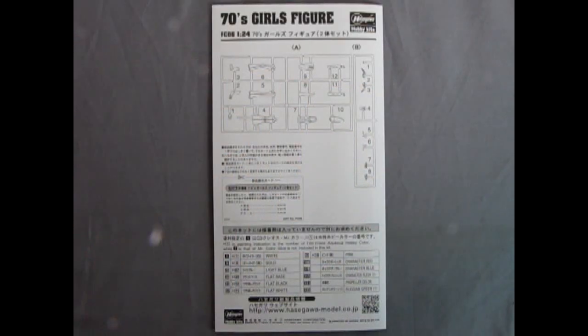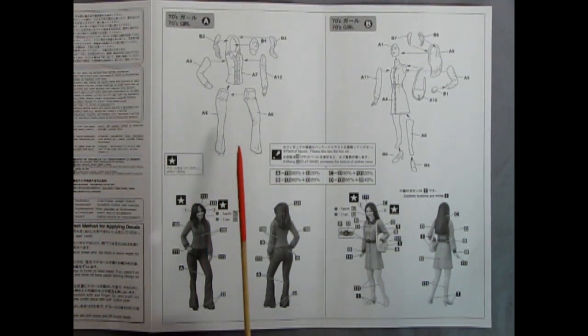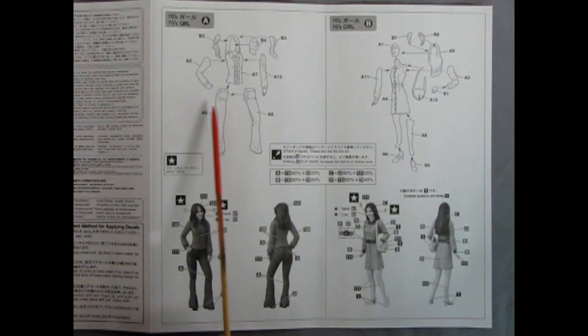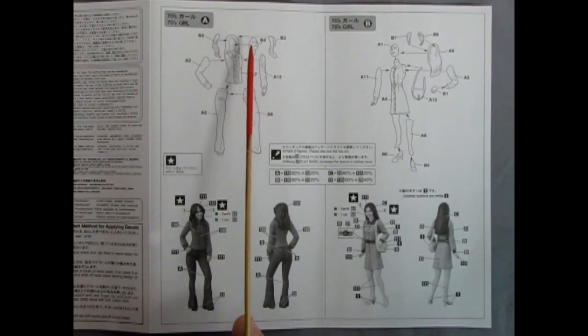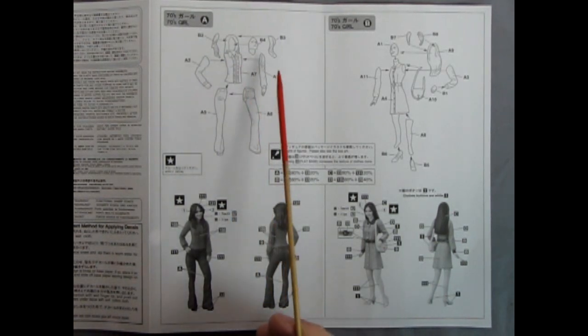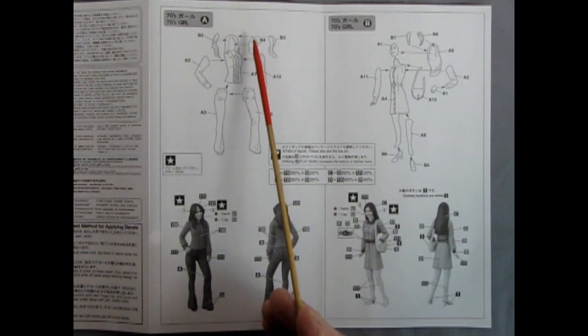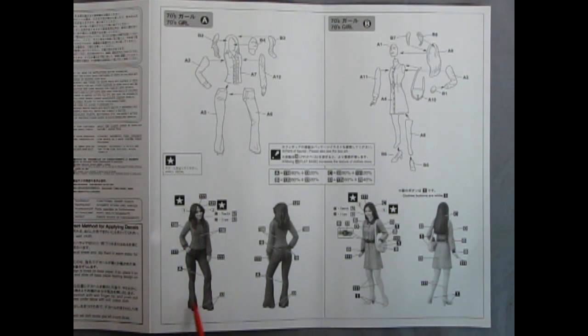The instructions for our 1970s girls figures is the long format. Here we have both parts trees A and B as well as a whole bunch of information in Japanese and paint colors down below. Here we have the instructions for both girl A and girl B. Girl A is a little more rock and roll. She's sort of out in the country or maybe the wild teenager. What we have is her head and then we've got the back of her head which is molded into the back of her back, and then we have right and left hand side hair. Then we have her arms and then her legs, and the shoes are molded in as well.